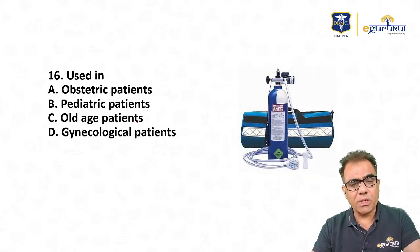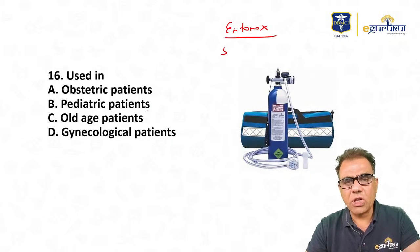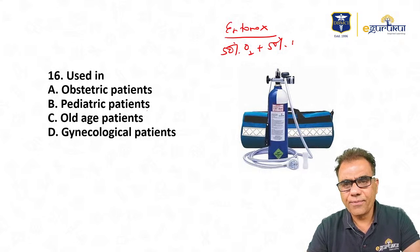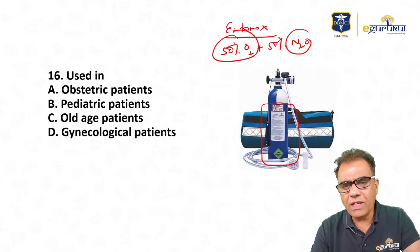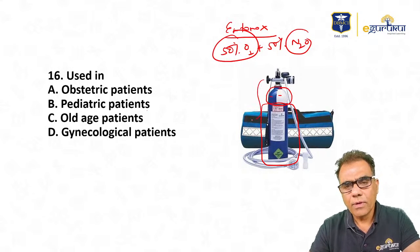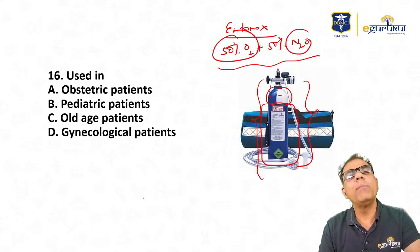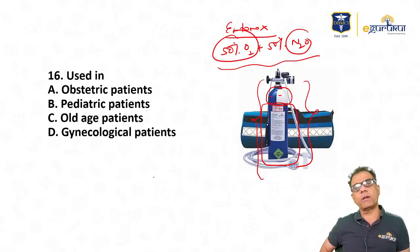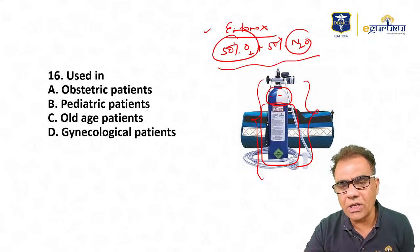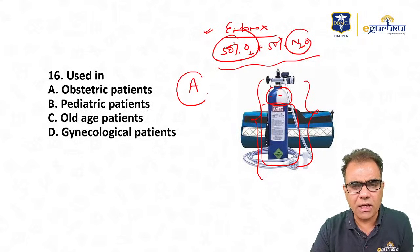Question number 16: Entonox is used in — obstetric patients, pediatric patients, old age patients, or gynaecological patients? Entonox is a mixture of 50% oxygen and 50% nitrous oxide. The cylinder is blue with white shoulders or white and blue quadrant indicating oxygen. In anesthesia it is used for labor analgesia in obstetric patients. Although lumbar epidural is the most preferred method for painless labor, Entonox inhalation is an alternative if epidural is not possible.